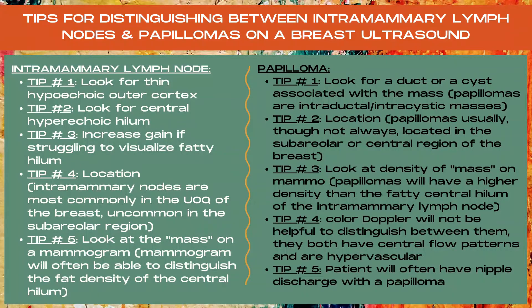It can be really challenging to distinguish between an intramammary lymph node and a papilloma on a breast ultrasound. Here are some tips for distinguishing intramammary lymph nodes. Tip number one: look for a thin hypoechoic outer cortex of the lymph node. Tip number two: look for the bright central hyperechoic fatty hilum.